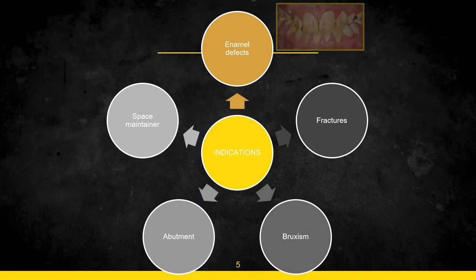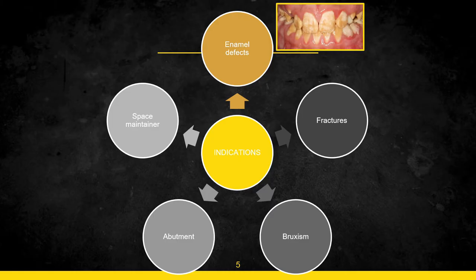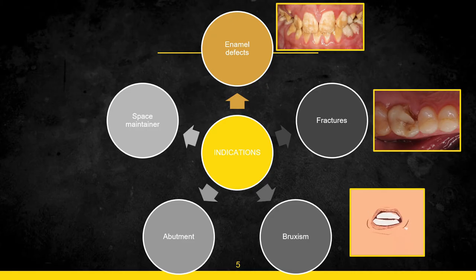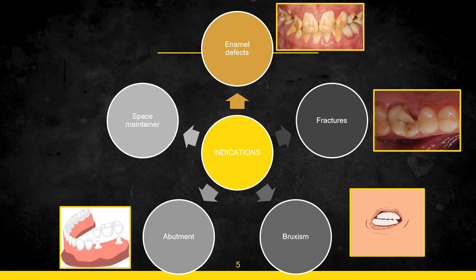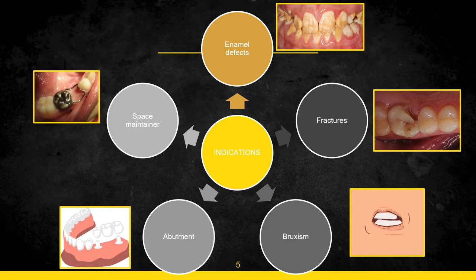Next are enamel defects — genetic defects like amelogenesis imperfecta, defined as the malfunction of proteins in the enamel such as enamelin and ameloblastin. Because of the defect in these proteins, the enamel laid down is not strong, so we place a stainless steel crown. Then come fractures of any sort, bruxism — where grinding of teeth attrits them and involves the pulp faster — and the use of stainless steel crown as an abutment or as a space maintainer such as a crown and loop.